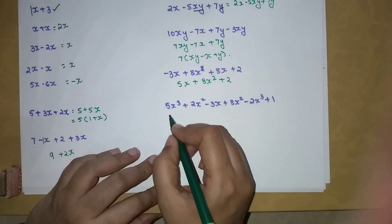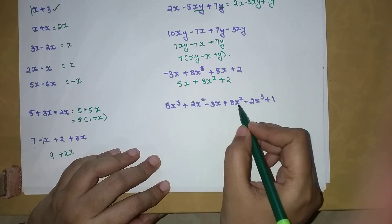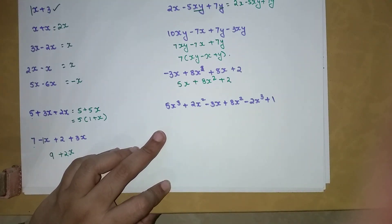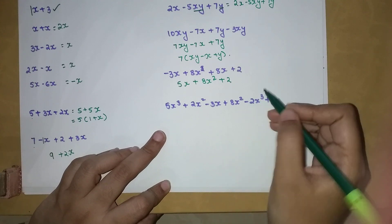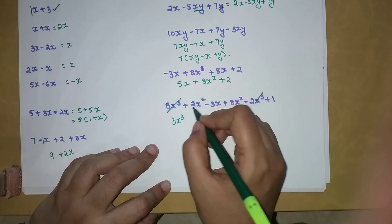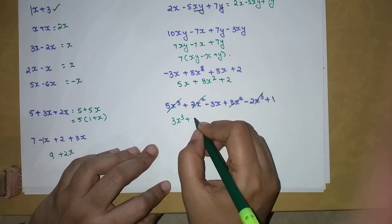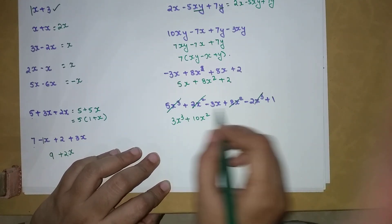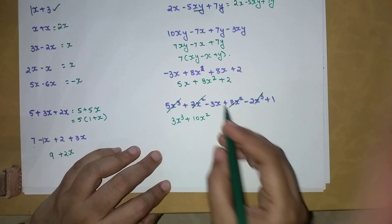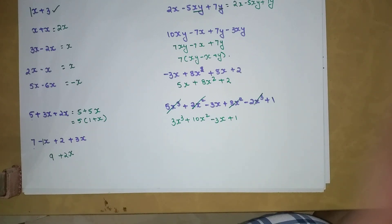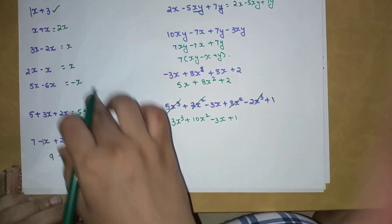Now: 5x³ plus 2x² minus 3x plus 8x² minus 2x³ plus 1. A good practice is to cancel terms as you work through them. First, 5x³ minus 2x³ gives 3x³ — cancel those two. Then 2x² plus 8x² gives 10x² — cancel those. Minus 3x has no matching term, and plus 1 stays as it is. So the answer is 3x³ plus 10x² minus 3x plus 1.